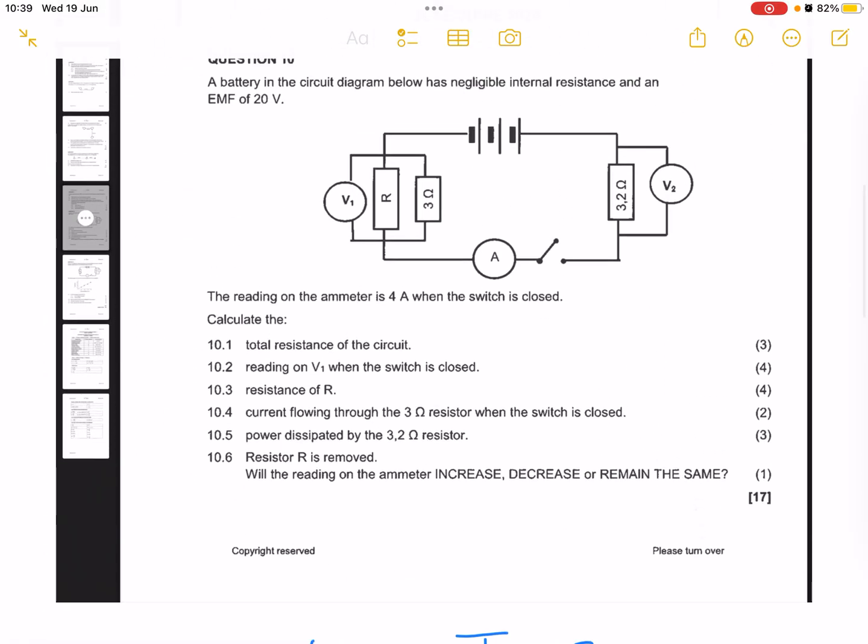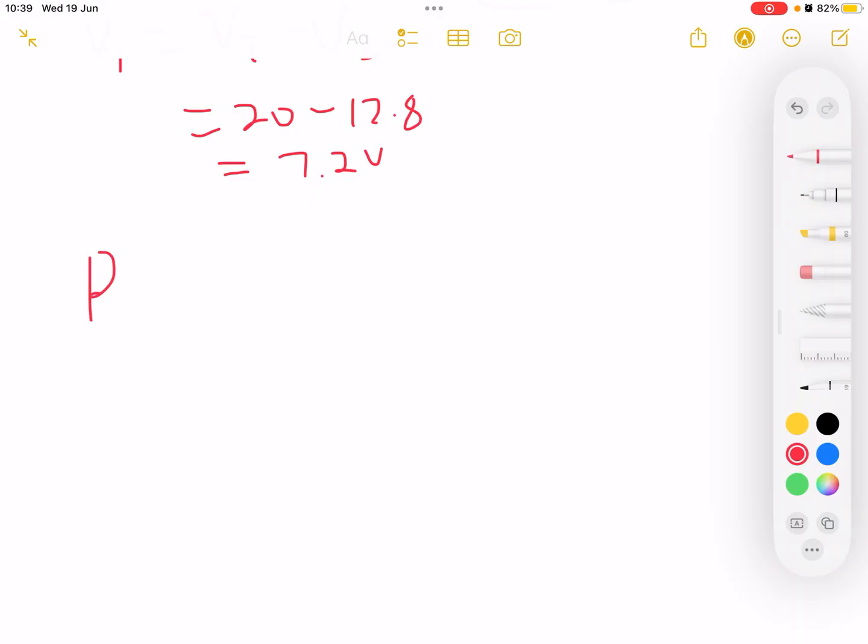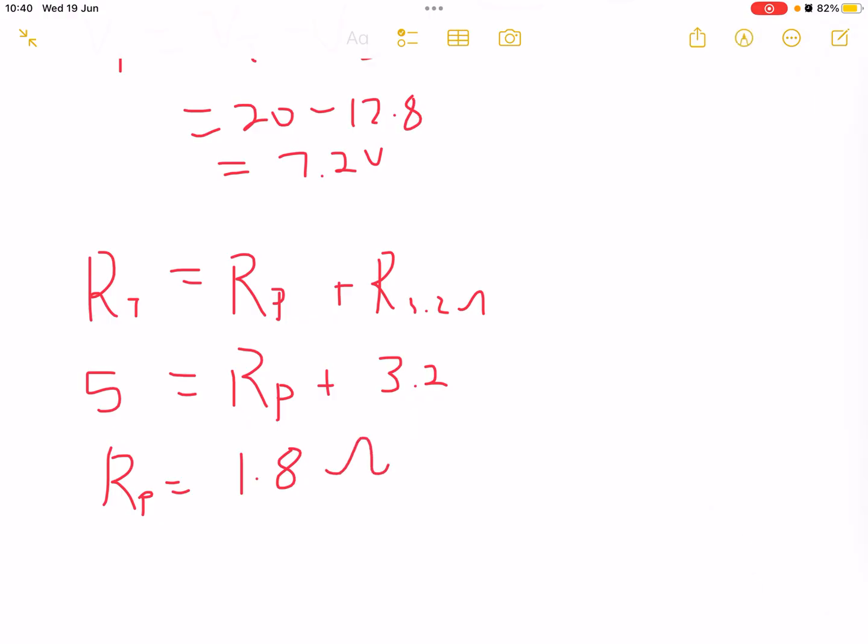They want us to calculate the resistance R. We know or we have calculated that R total, which is made up of the R parallel plus the R of 3.2 ohm. R total we've got is 5, which equals R parallel plus 3.2 ohm. Then R parallel equals 1.8 ohm.